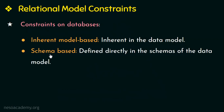The next category is schema-based constraints or explicit constraints. These constraints are defined directly in the schemas of the data model. An example of a schema-based constraint is: the age of the employee has to be between 22 to 65 years, so age is restricted to be between 22 and 65. This constraint is defined directly in the relational schema. We will learn more about this constraint later in this video.